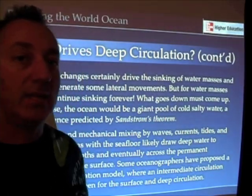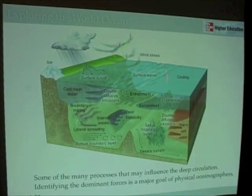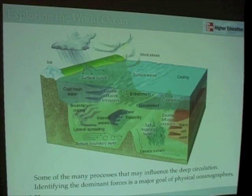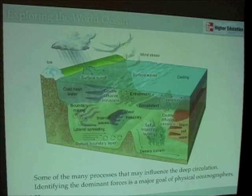Understanding the deep ocean circulation is ultimately critical to understanding Earth's climate. There are many different kinds of things that might influence deep circulation — things like runoff, surface waves, cooling, winds, and turbulent types of motions — all sorts of different factors that may contribute to mixing of the deep waters or may change the temperature and salinity of deep waters. This figure is meant to give a sense of the complexity of the problem and the different areas that oceanographers are investigating.